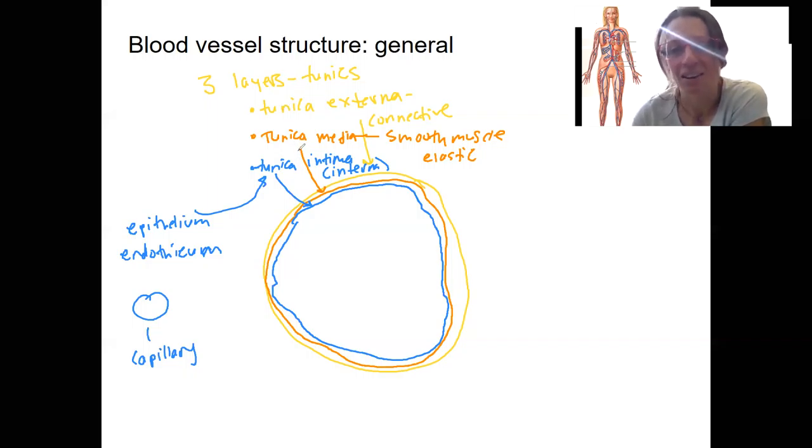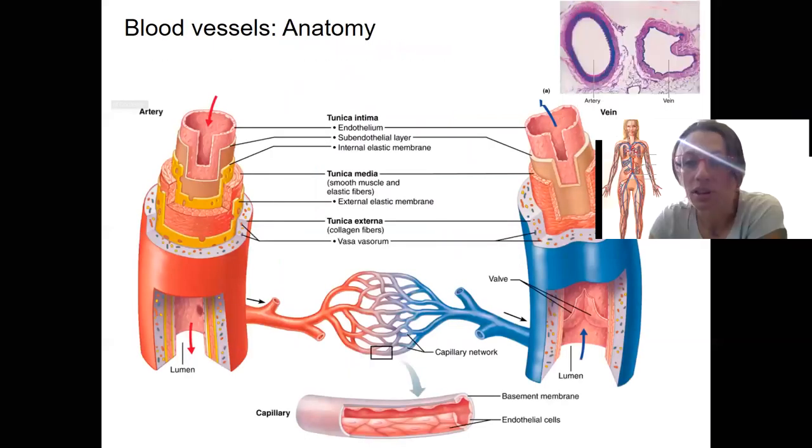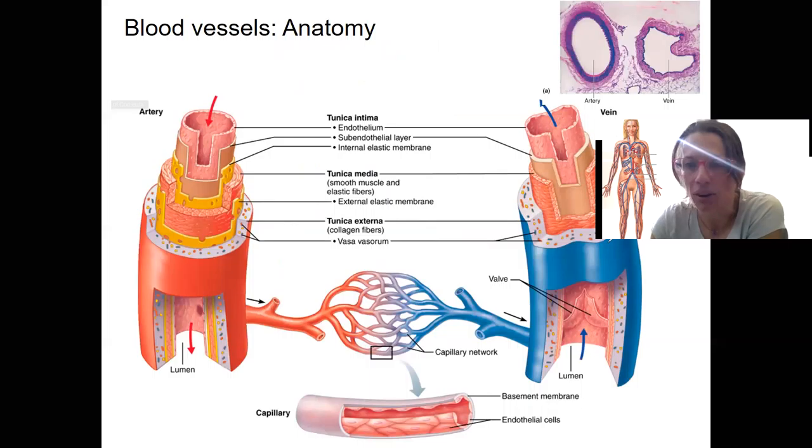The other blood vessels, so elastic arteries, muscular arteries, arterioles, veins, and venules, are going to have these three layers, but in varying compositions, concentrations, amounts. So that's where we're going next. We'll see those different compositions.